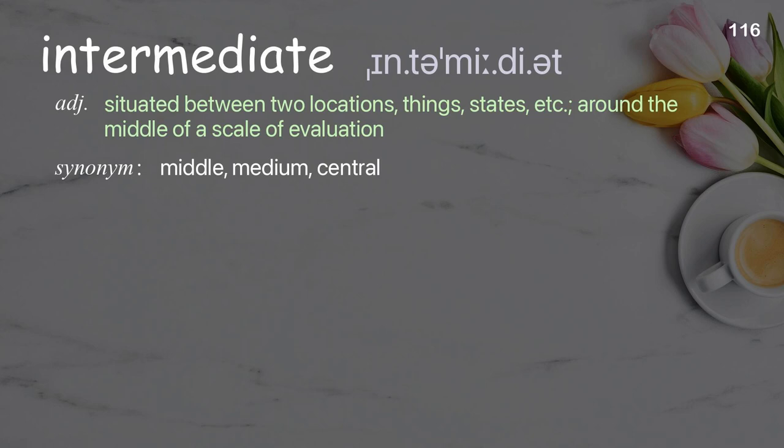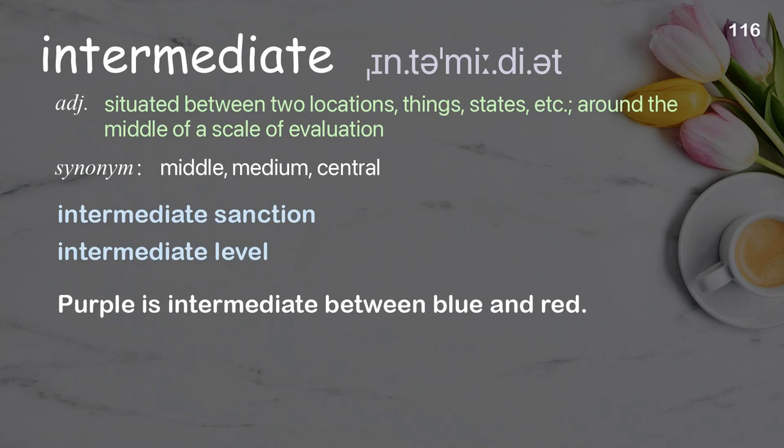Intermediate: situated between two locations, things, states, etc., around the middle of a scale of evaluation. Examples: intermediate sanction; intermediate level. Purple is intermediate between blue and red.